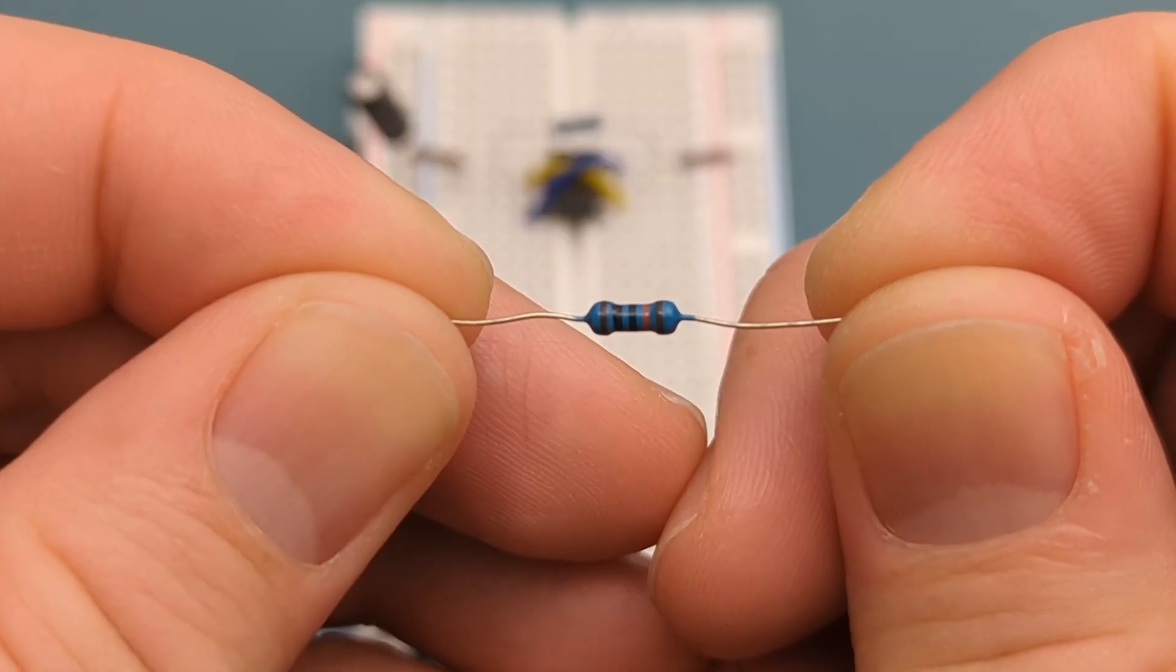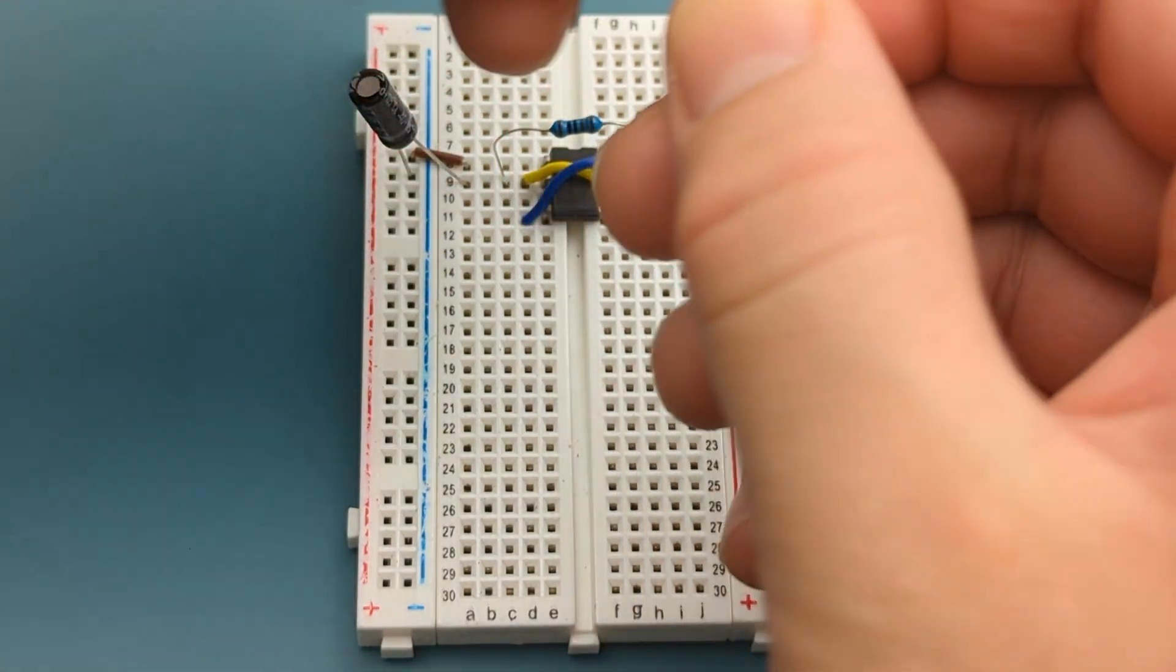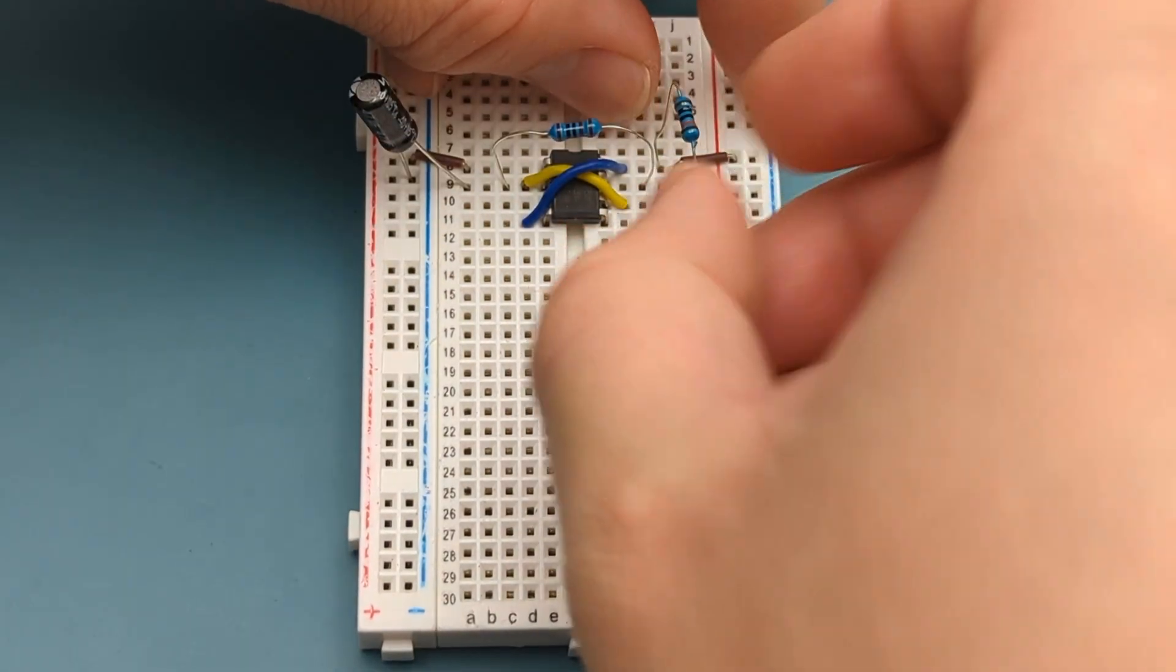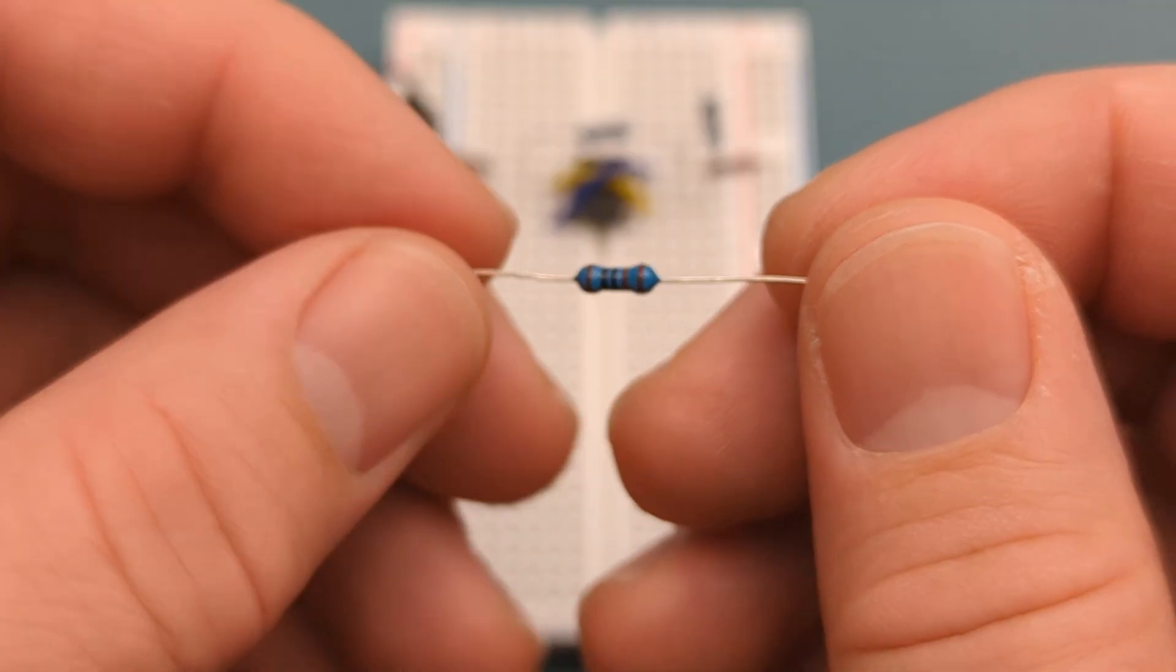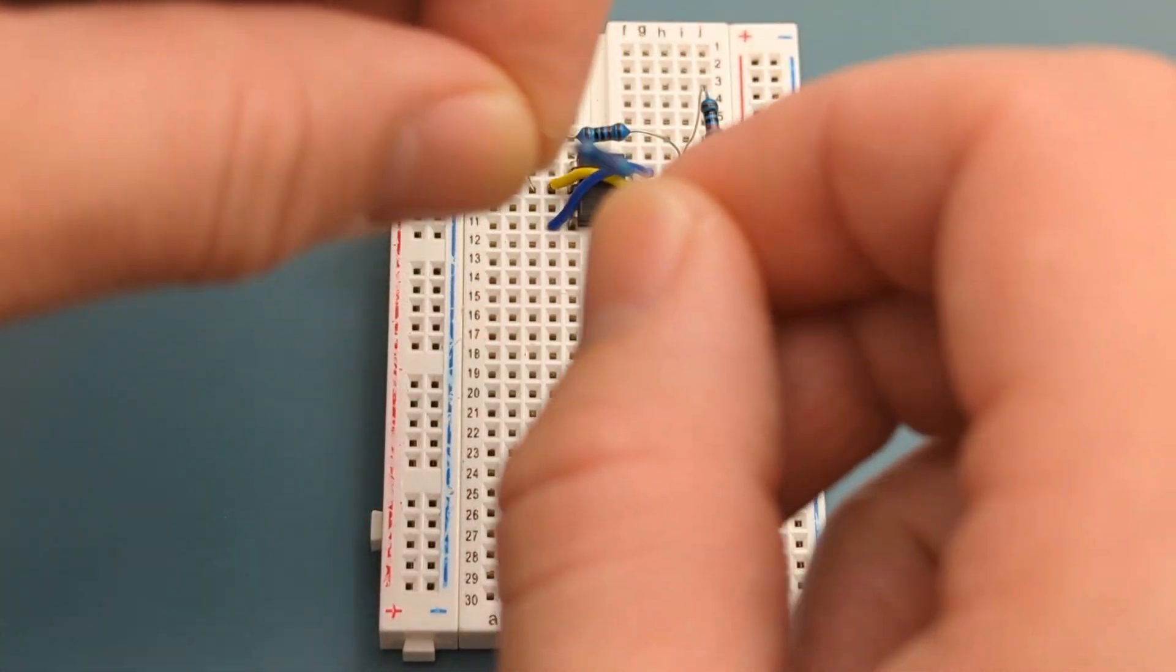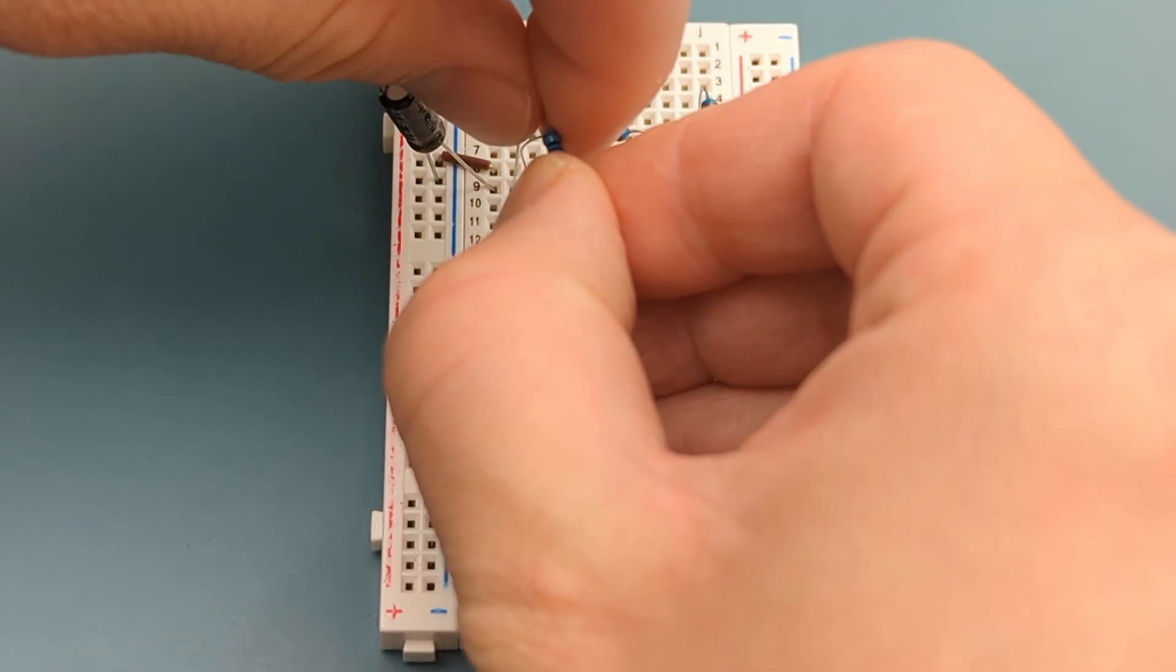Bend the ends of a 100 kilo ohm resistor. Insert a 100 kilo ohm resistor into pin 7 or discharge and pin 8 or VCC. Bend the ends of a 1 kilo ohm resistor. Insert a 1 kilo ohm resistor into pin 3 or output in a few rows below the 555.